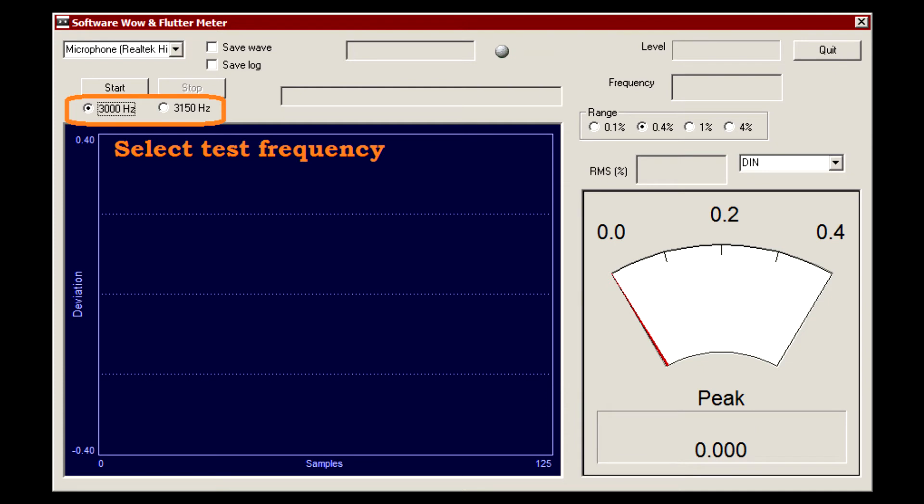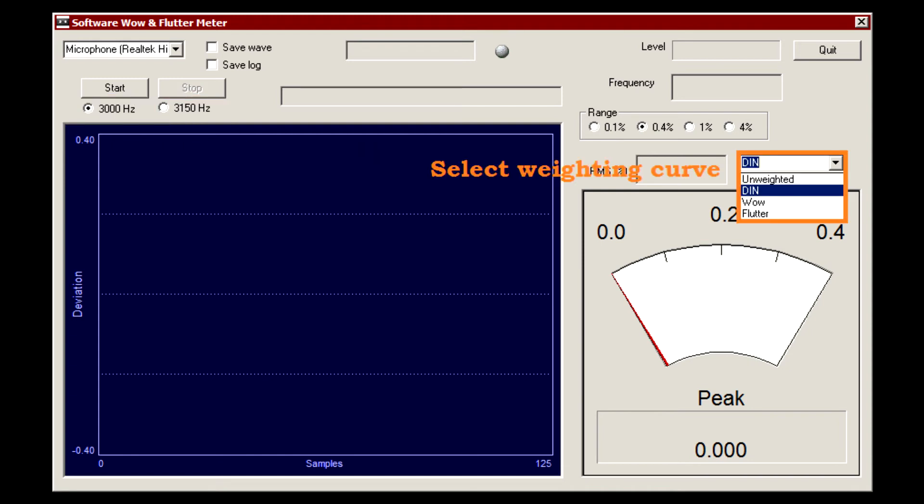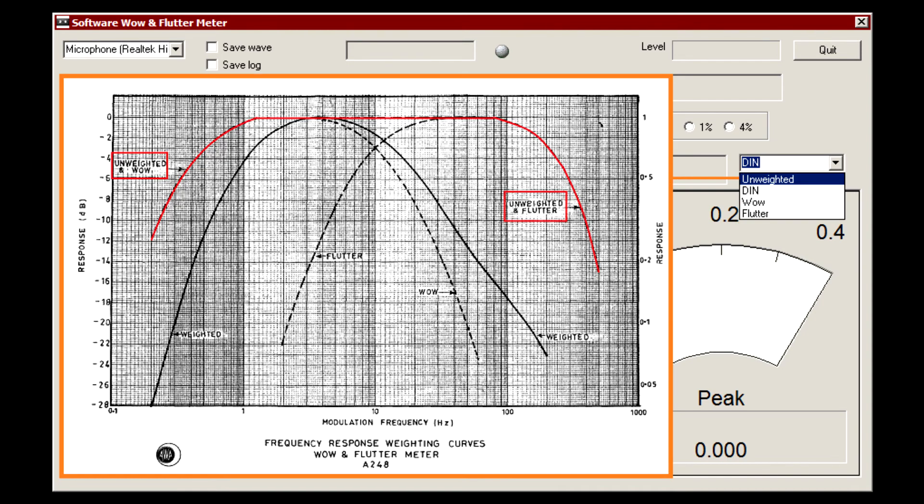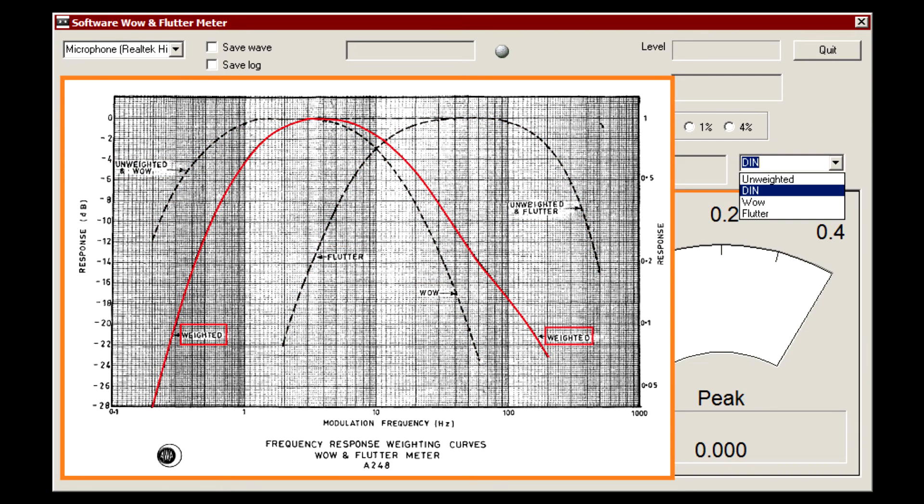First, select the test frequency: 3000Hz or 3150Hz, depending on the test tape you have. Choose Weighting Curve from the drop-down box on the right. The choices are Unweighted, Wow, Flutter and, confusingly, DIN.